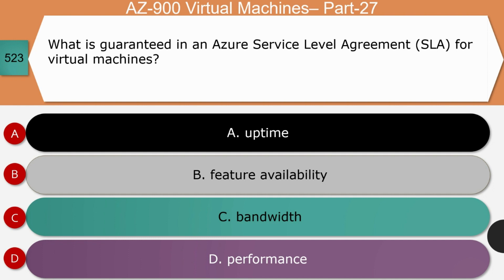Question 3: What is guaranteed in an Azure Service Level Agreement for virtual machines — uptime, feature availability, bandwidth, or performance? Feature availability is not directly linked with virtual machines. Bandwidth is not a commitment from the cloud service provider. Performance of virtual machines depends on the application, so application performance is not in the hands of the cloud service provider. The right answer is uptime.